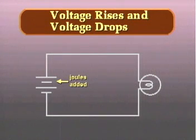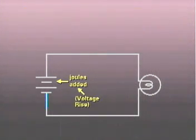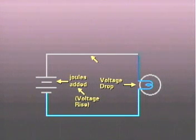In voltage rises and voltage drops, we looked at a series circuit and saw how voltage increases or rises at the voltage source and how voltage decreases or drops as the electrons flow through a load and give up their energy.